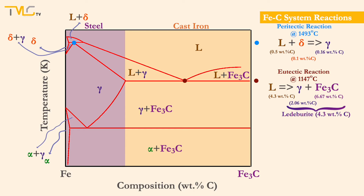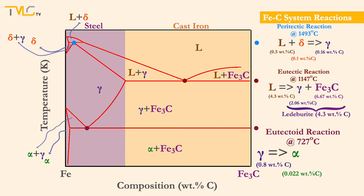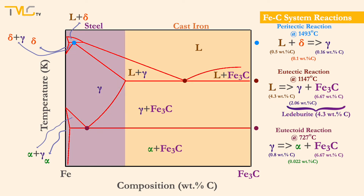The last reaction seen in the iron-carbon phase diagram occurs at 727 degrees Celsius, which is a eutectoid reaction. It is one of the most important reactions in metallurgy and materials science. In this reaction, the gamma phase having 0.8 weight percent carbon dissociates into an alpha phase with 0.022 weight percent carbon and a cementite phase having 6.67 weight percent carbon. This reaction occurs in the steel region, and the product is called pearlite — a mixture of ferrite and cementite phases in a lamellar structure.